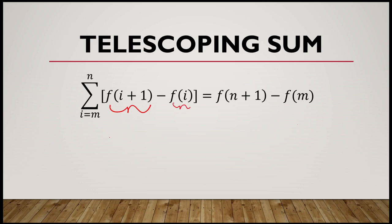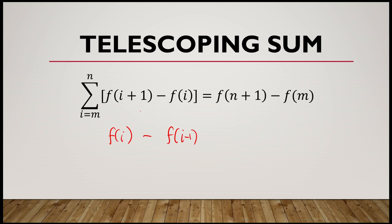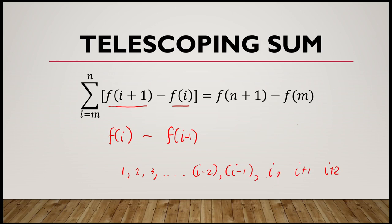Some books use f(i) minus f(i-1). That is also valid because f(i) and f(i-1) are still consecutive, and i is still greater than i-1. Whether arranged as i-2, i-1, i, i+1, or i+2 — any consecutive pair is acceptable, as long as the larger term comes first.